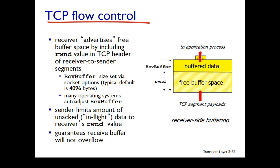Typically, the receive buffer size is set via socket options and the typical default is about 4KB, 4096 bytes. Many operating systems will be auto-adjusting the receive buffer based on what else is happening at that machine.